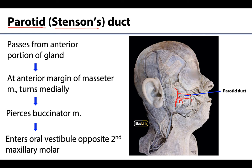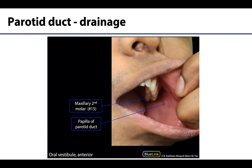Here we're looking at the buccal fat pad, and the buccinator muscle will be deep to that. When thinking of the buccinator muscle, think of the cheek region. The duct will enter the oral vestibule opposite the second maxillary molar, and what you see in the oral vestibule is a little mounding with a small opening in the middle, which is the papilla of the parotid duct. Saliva from the parotid gland will secrete through here and then it's in the oral cavity.